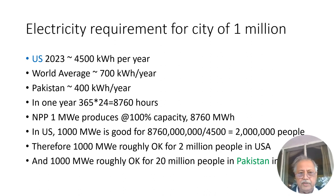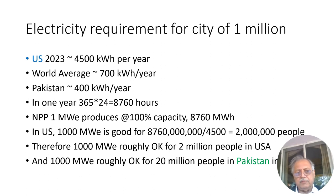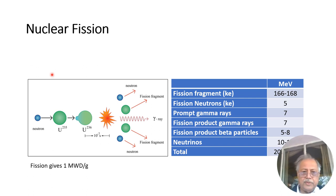To give some idea of electricity requirements for a city of one million: in the United States, household consumption in 2023 was 4500 kilowatt-hours per year. The world average is about 700 kWh; Pakistan is below world average at 400 kWh per household per year. From these numbers, a 1000 megawatt nuclear plant operating at 100% capacity produces 8760 megawatt-hours annually — sufficient for about 2 million people in the US, or as many as 20 million people in a low-consumption country like Pakistan.